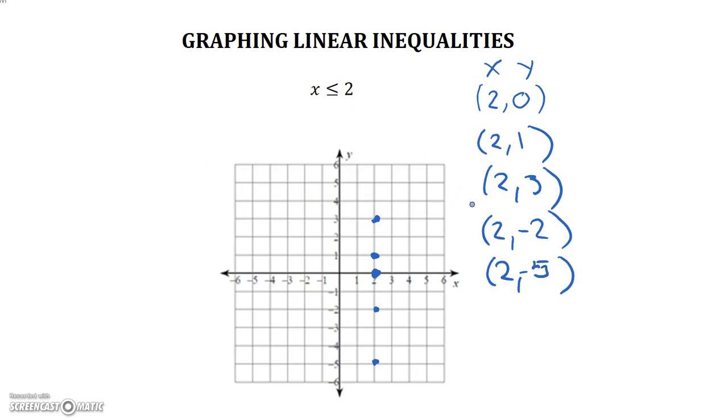Now going back to our inequalities, we have our points for our line. Now let's look at our inequality sign. It's less than or equal to. And that equal to component, remember, means that our line is going to be a solid line.